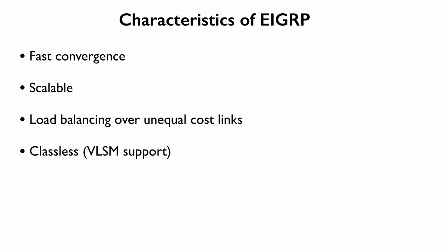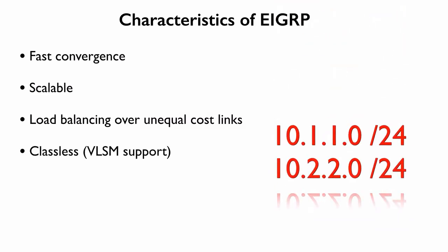And something else just to know about EIGRP, and this is no surprise, it does support VLSM. It supports variable length subnet masks, so we don't have to advertise a network at its classful boundary. We can advertise information about the subnet.